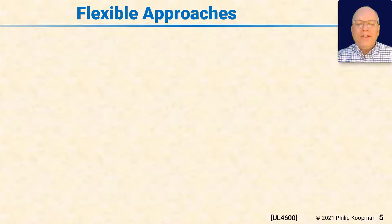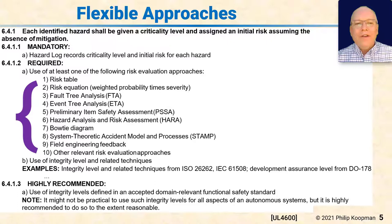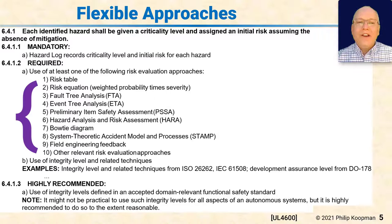The standard provides a lot of flexibility. Besides the ability to deviate from everything except the mandatory prompt elements, there are also lists of alternate approaches that can be used. For example, in clause 6.4.1, which talks about criticality levels and initial risks for each hazard, it requires you have a hazard log — a written list of all the hazards you need to mitigate. How you get there is entirely up to you: risk tables, fault trees, event trees, bowtie diagrams, STAMP, or other relevant risk evaluation approaches. What is mandatory is that you end up with a written list of hazards.